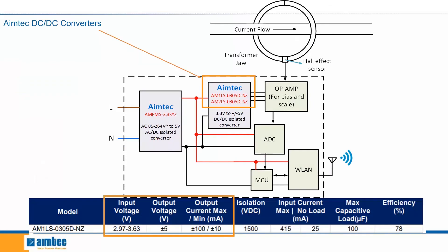Here we have an example of how AIMTECH DC to DC converters are used. We have an AC to DC converter, the AMEM5, converting the current from AC to DC with an output of 3.3 volts. This is then received by the AM1LS or AM2LS — depending on the power requirements of the system — which is a DC-DC converter. This converter takes an input voltage of between 2.97 and 3.63 volts and outputs either plus or minus 5 volts. For simplicity, let's say it outputs 5 volts, meaning all components within the circuit require 5 volts.